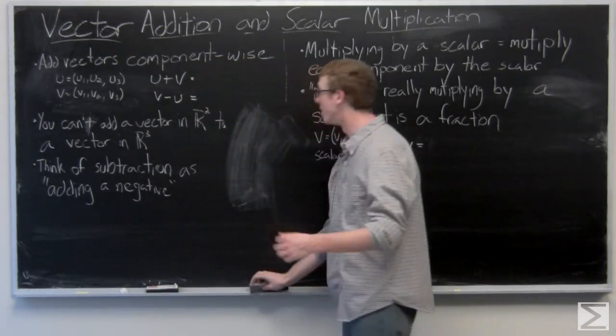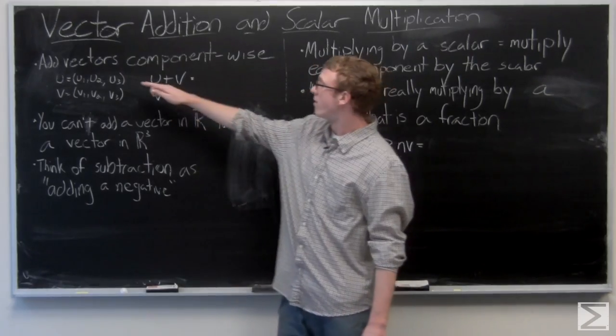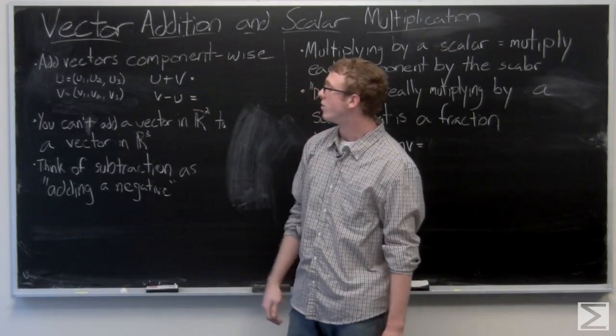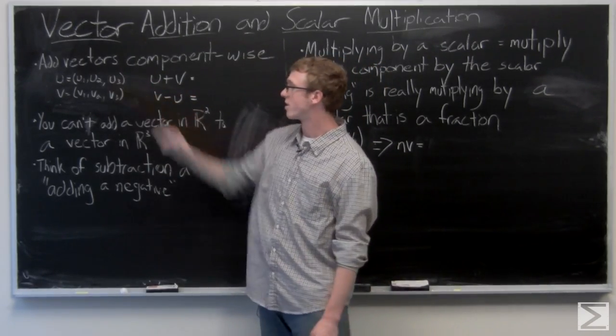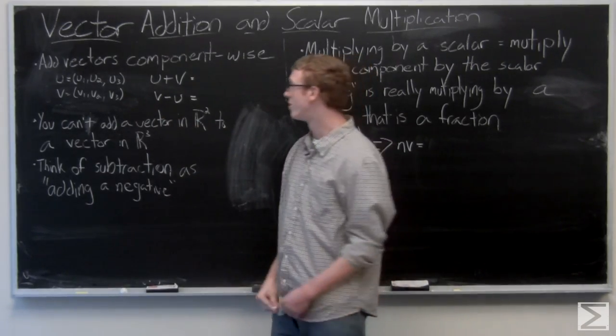So the basics of addition, you add vectors component-wise. You have vectors u1, u2, and, excuse me, vector u with components u1, u2, and u3. Vector v, components v1, v2, v3. It's very simple, the addition.